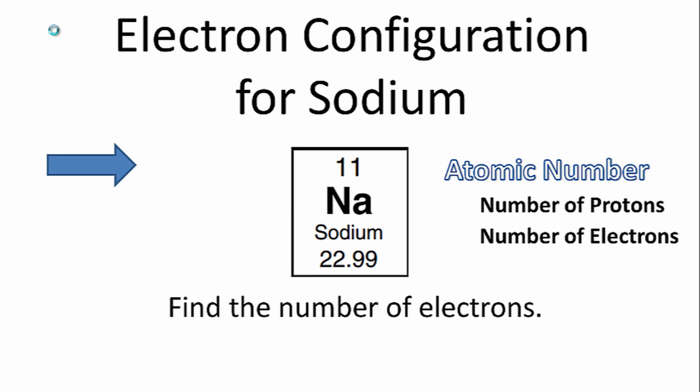We can do that by looking on the periodic table and finding the atomic number. That's the number above the element symbol on the periodic table. It represents the number of protons, but it also represents the number of electrons.